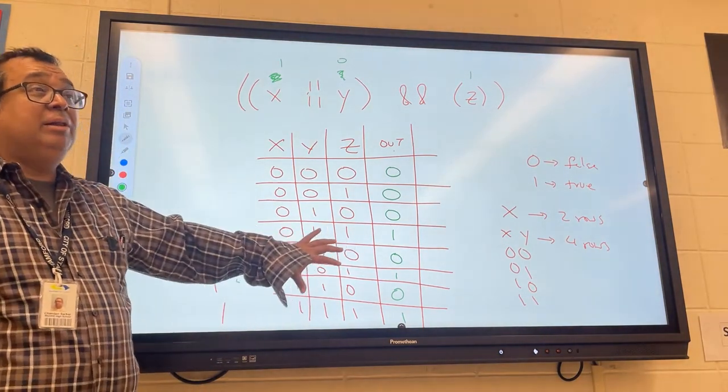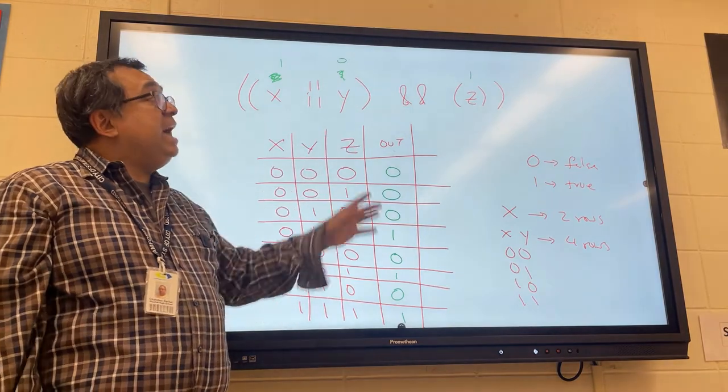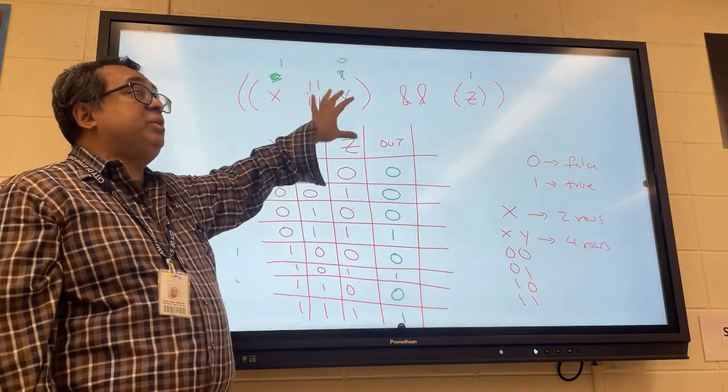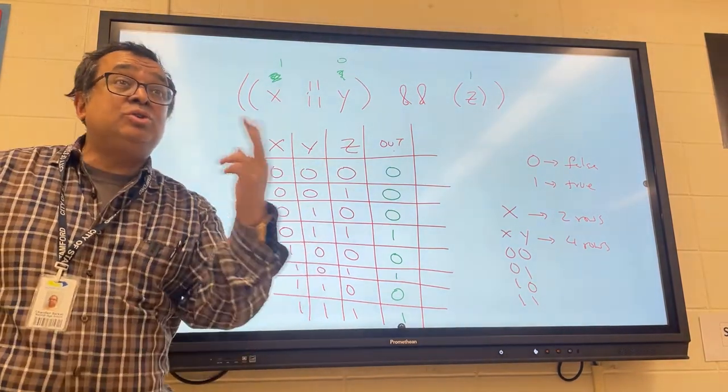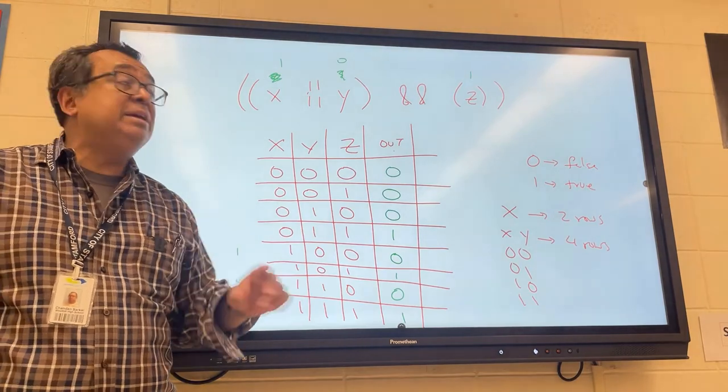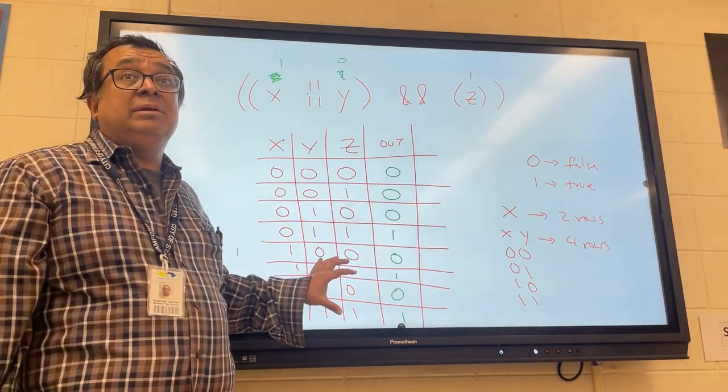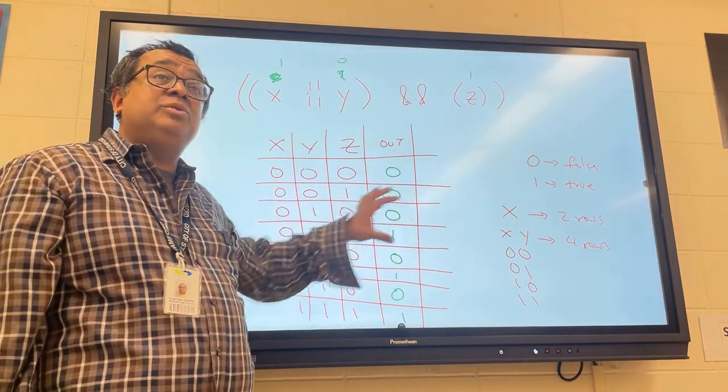This truth table uniquely defines this expression. If I had another expression, and I wanted to know if it was equivalent to this expression, I would look at the truth table there and the truth table here. And the only way those two expressions could be equivalent is if the two truth tables were identical. That's the only way two logical expressions can be equivalent, if their truth tables match.